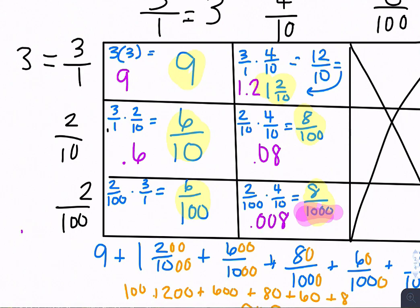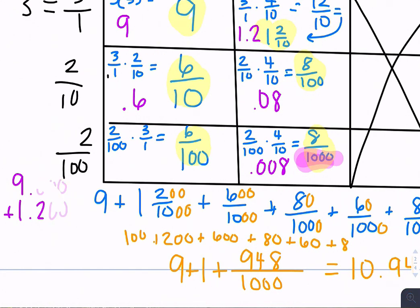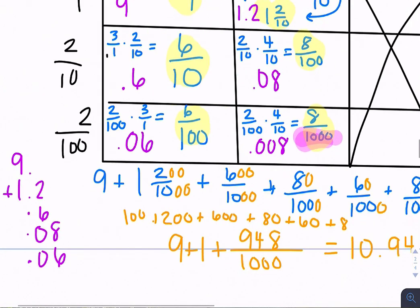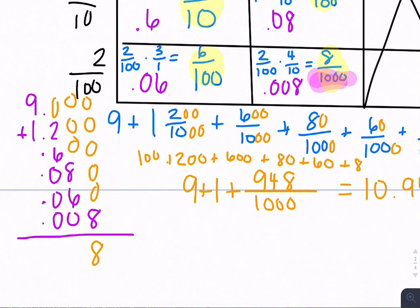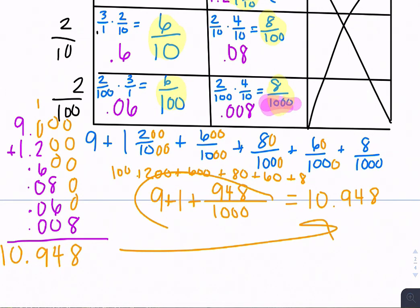So I really have 9.000 plus 1... I have to make sure my decimals are lined up. And I forgot this one. This would be 0.06. Now if you want, just make sure you have all of your decimals lined up in the correct space. 14, 9, and that's exactly what we got over here.